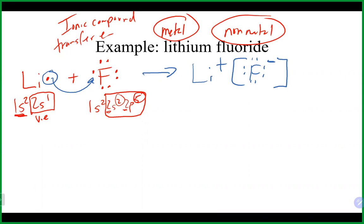Looking at the electron configuration: lithium lost its electron and ends up with only two electrons — a configuration of 1s2. Element number two on the periodic table is helium, a noble gas. By giving away its electron, lithium backs up to the noble gas that came right before it. They're not changing into the noble gas — they're just having the same number of electrons as the noble gas, since changing elements would require changing protons.